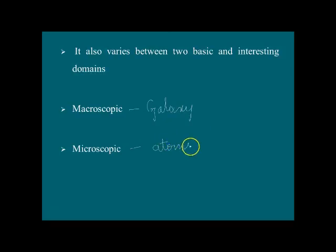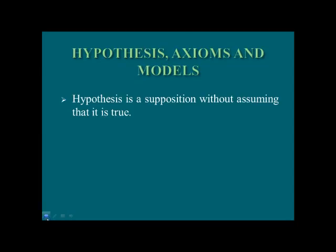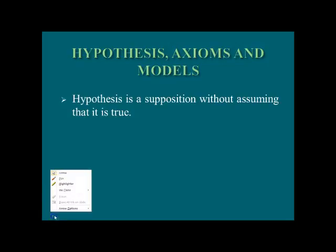So the scope of physics varies from microscopic to macroscopic, and it is very large. Now we are going to study what is hypothesis, axioms, and models. Do you have any idea what these terms mean?